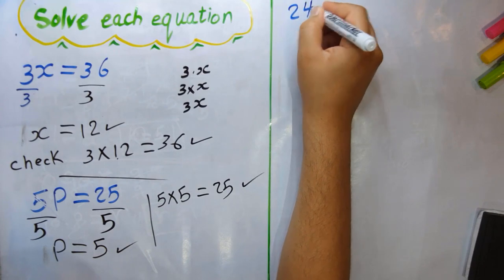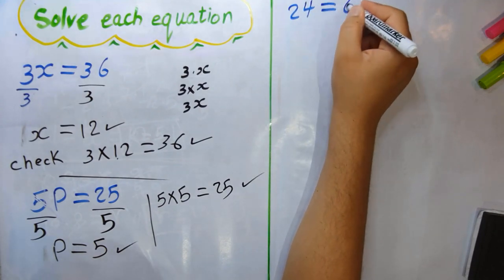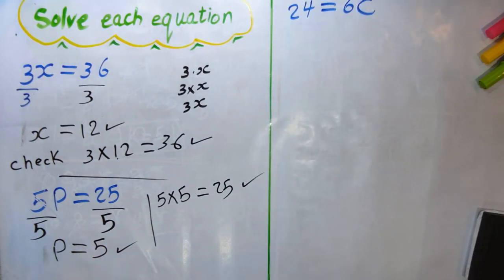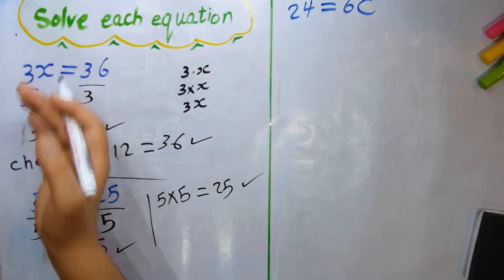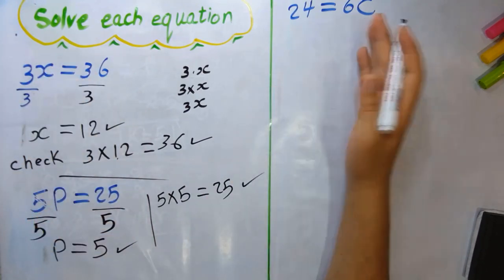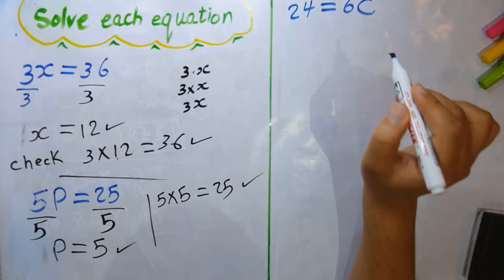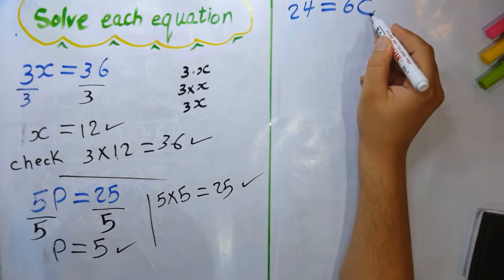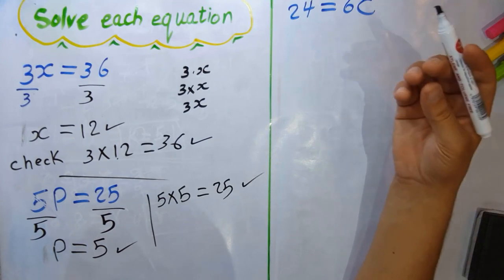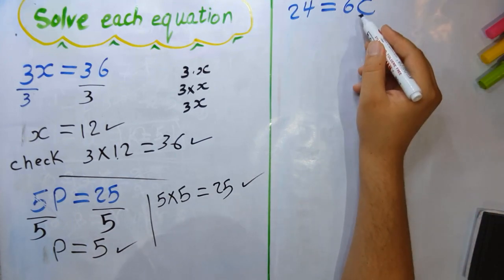Next example: 24 = 6c. Now the variable is on the right side. Whether the variable is on the left or right side doesn't matter — the main thing is to make the variable c alone on its side.